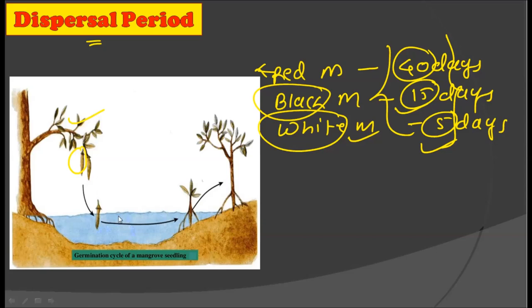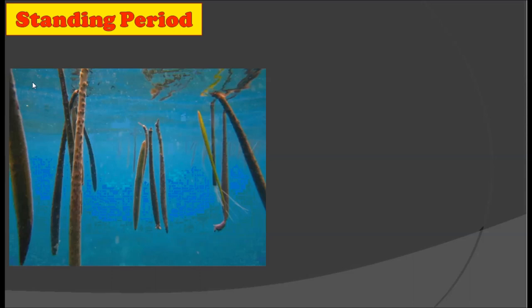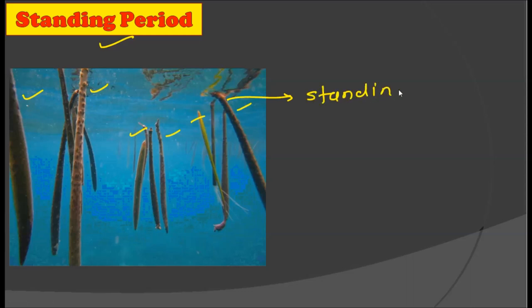As we discussed in the previous lecture, all mangroves grow near water bodies, so there is a 99% chance that the propagule will fall into the water. After falling into the water bodies, as you can see in this picture, all these propagules fall in and remain in a standing position. They do not start germinating as soon as they fall from the parent plant — they have a standing period. When this propagule falls off from the parent plant, it may remain standing or sometimes be horizontal, but either way they have a period of dormancy.